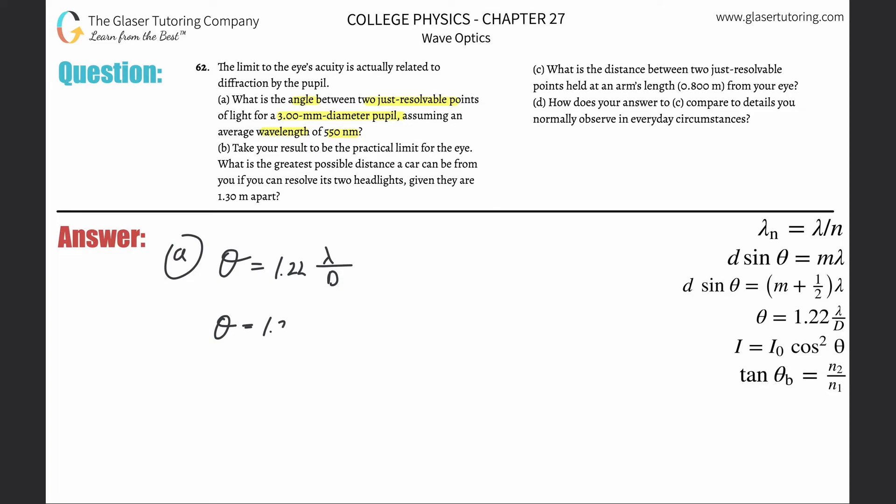So here, the angle of resolution will be equal to 1.22 multiplied by the wavelength. Here it's in nanometers. Technically you could leave it in nanometers, but then your diameter better be in nanometers. In other words, you just have to have consistent units. So instead of thinking about converting it all to millimeters or micrometers or nanometers, I just convert everything here to meters. So 550 times 10 to the minus ninth, that's a simple conversion, divided then by the diameter of that particular aperture. In this case, it's the pupil, so it's 3 times 10 to the minus 3.